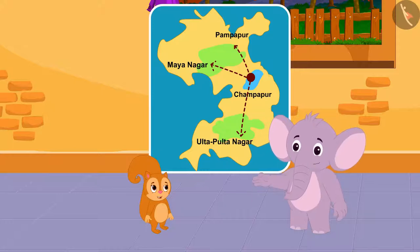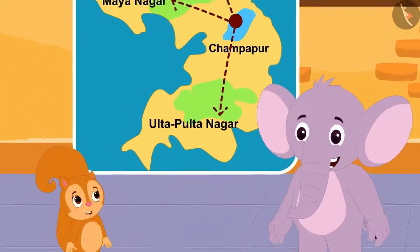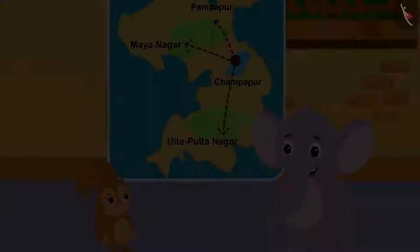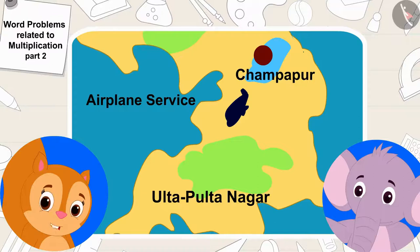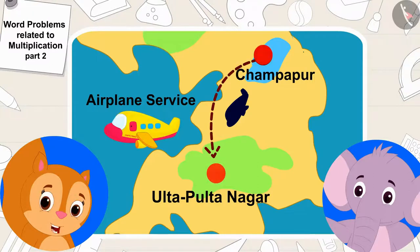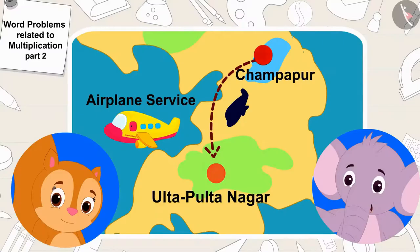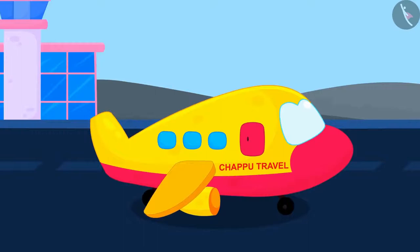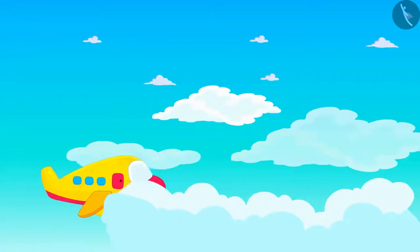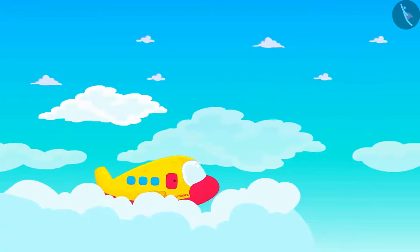Appu, our Chapu Travel Company is doing very well. Then why don't we start an airplane service from Champapur to Ulta Pulta Nagar? Chanda told Appu. Yes Chanda, that's a very good suggestion — let us buy an airplane too! Appu said to Chanda. And so Chappu Travels started an air service from Champapur to Ulta Pulta Nagar.